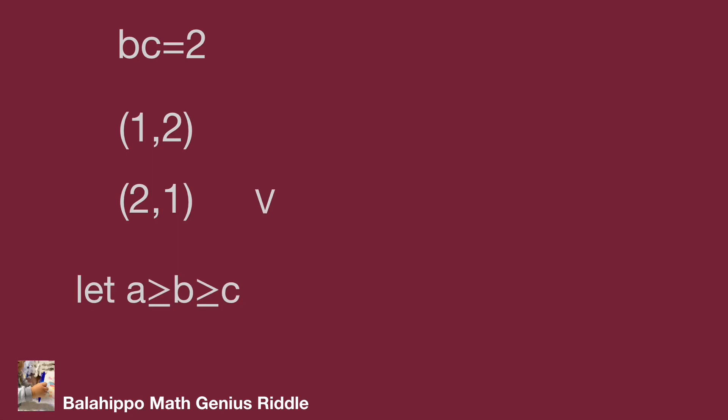Substitute B by 2 and C by 1 into the equation A plus B plus C equals ABC. A plus 2 plus 1 equals 2A, so we get A equals 3. Then we get the number group (3,2,1).